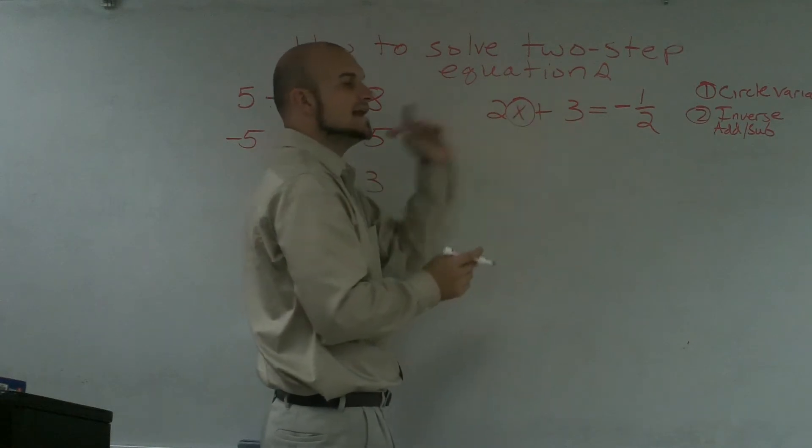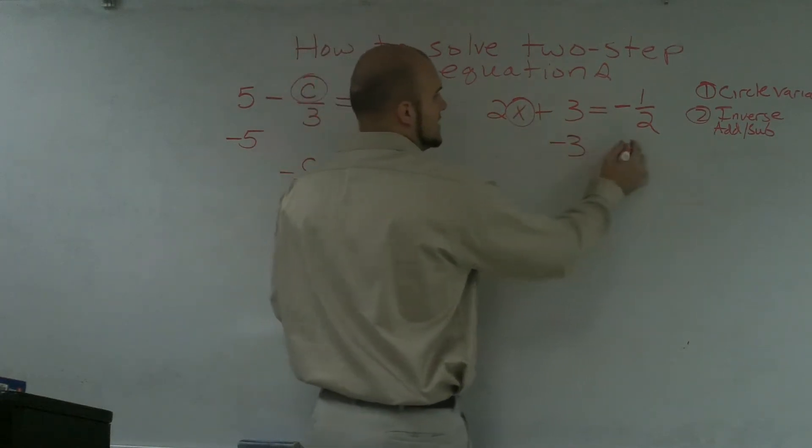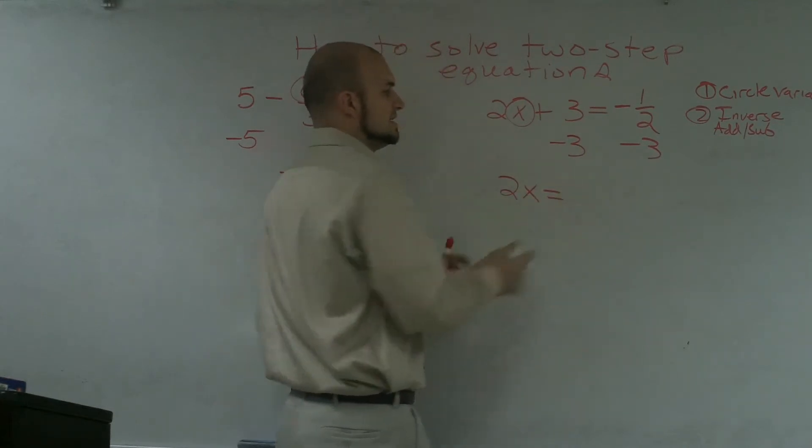Over here, I have a 3 that's added to the x. I'm going to subtract the 3. Therefore, I'm left with 2x is equal to, and if you guys remember,